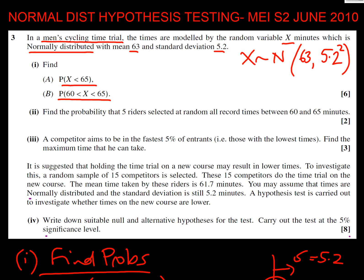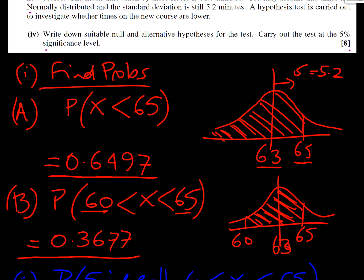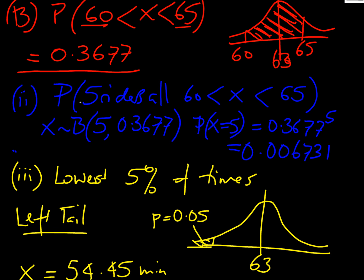What have we got next? Looking at blue, find our probability of five riders selected at random, all record times of between 60 and 65. We've just worked out that probability for one, haven't we? In effect, we've got a binomial now with n equals 5, and the probability of 0.3677. So the probability that x equals 5 there is just going to be 0.3677 to the power of 5, which is going to give us 0.006731.